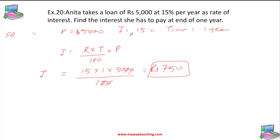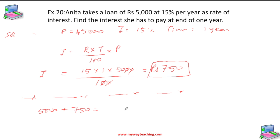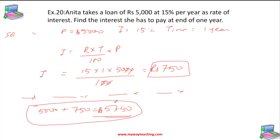This question did not ask for the total amount Anita has to return. But if they do ask, the amount would be Principal + Interest = ₹5,000 + ₹750 = ₹5,750. Just for information, that is how you can calculate the total amount.